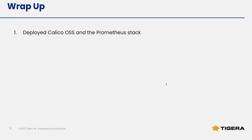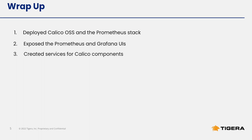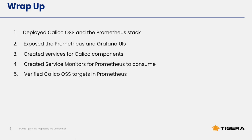To recap what we went over in this video: we first deployed both Calico OSS and the Prometheus stack using Helm. We then exposed Prometheus and Grafana's UIs using an ingress. We created services for both Calico node Felix and Calico Typha — the Calico kube controller service was already created. These services were referenced by the ServiceMonitors we created to tell Prometheus how to discover the Calico endpoints to scrape. We verified the targets were discovered correctly in Prometheus, and then created a Felix dashboard based on the default dashboard provided in the Project Calico docs site.